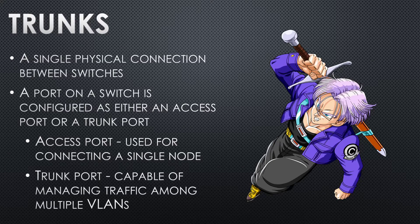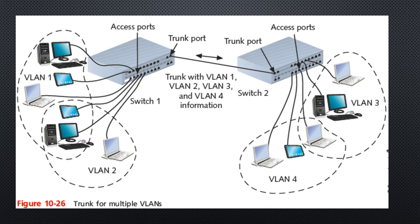A single physical connection between switches is called a trunk. A port on the switch is considered either an access port or a trunk port. The access port connects a single person; the trunk port connects to another switch. The line that goes between two switches is a trunk line — it connects the two major switches and has tons of traffic going back and forth, not just one person. Sometimes switches physically have one port devoted to it, called an uplink port. Sometimes you have to get into the switch's software and designate which port is the trunk port.